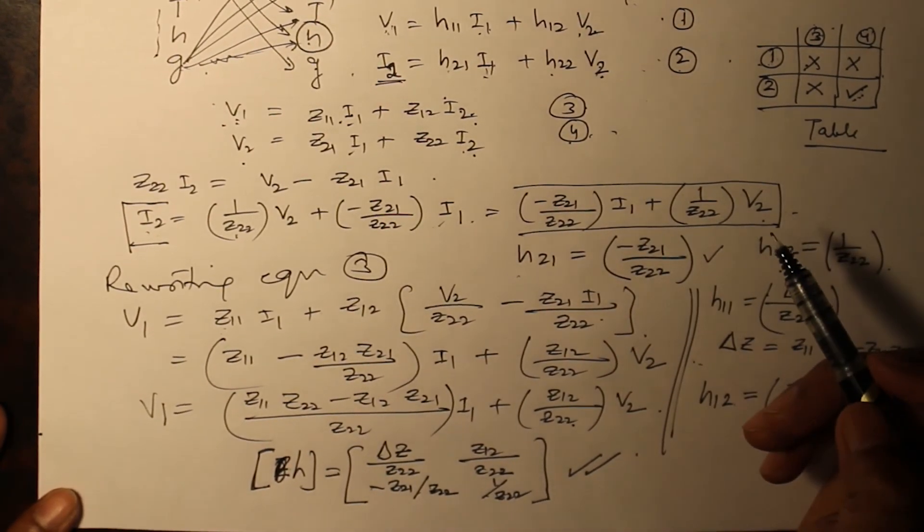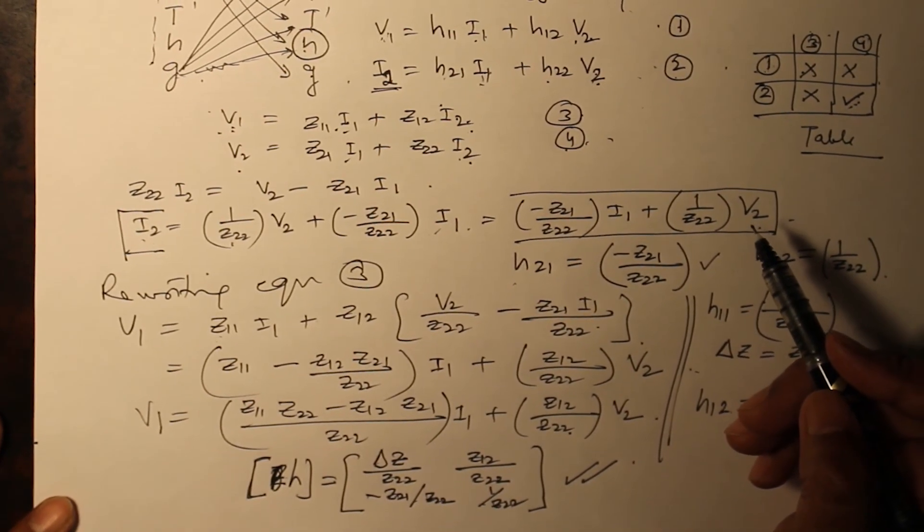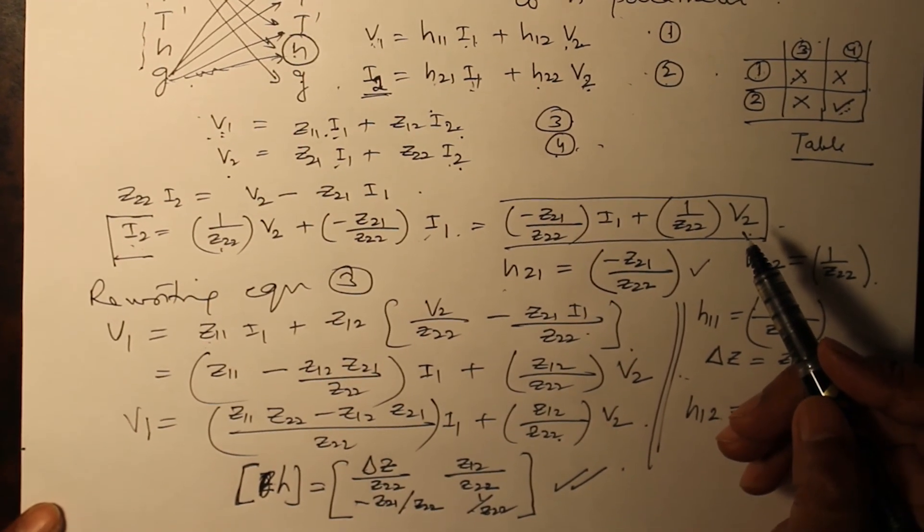Thereafter, replace this equation in the other one and find out the other two parameters. This is how you can do equation of interconversion. And generally, in examinations, a couple of parameters are already given. Thank you.